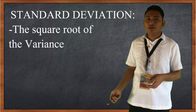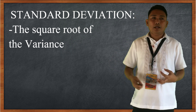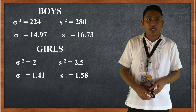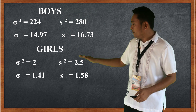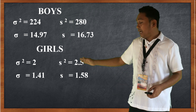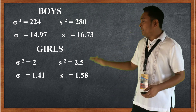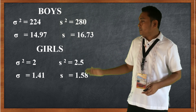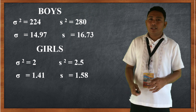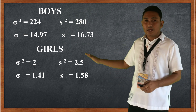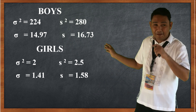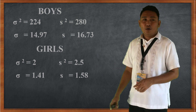For the standard deviation of ungrouped data, simply take the square root of the variance. For the boys, the population variance is 224, and the square root is approximately 14.97. The sample variance is 280, and its square root is approximately 16.73. For the girls, the population variance is 2, and its square root is 1.41. The sample variance is 2.5, and its square root is 1.58.